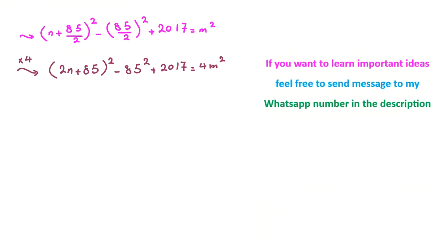Now I want to calculate 85 squared. Let's calculate 85 squared: 85 times 85, 5 times 5 is 25, 5 times 8 is 40 plus 2 is 42, 8 times 5 is 40, 8 times 8 is 64 plus 4 is 68. So it will be 7225. And when we multiply by 4, we should also multiply this one by 4, so plus 4 times 2017.